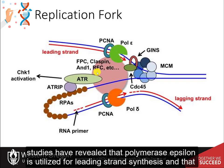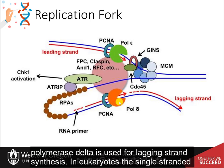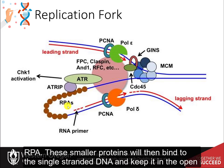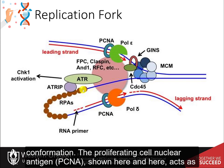Mutational studies have revealed that polymerase epsilon is utilized for leading strand synthesis and that polymerase delta is used for lagging strand synthesis. In eukaryotes, the single-stranded DNA is stabilized by the heterotrimeric complex known as replication protein A, or RPA. These smaller proteins bind to the single-stranded DNA and keep it in the open conformation.